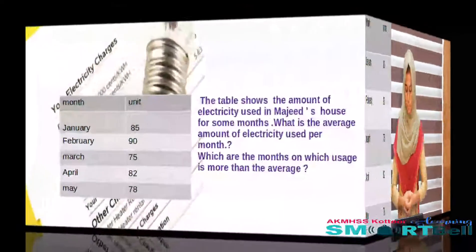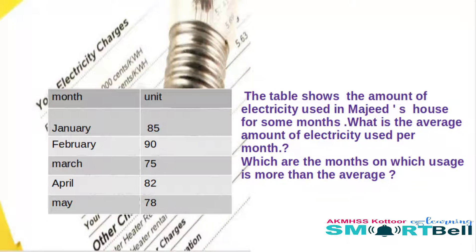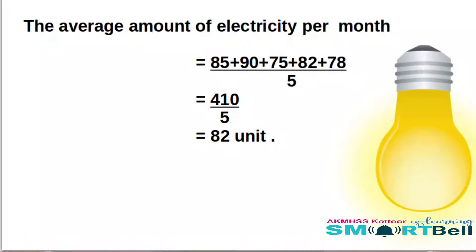Here is one more question related to electricity bills. Do you know how much is the electricity bill in your home this month? Here is a list showing the amount of electricity used in Majid's house for a few months. We need to find the average amount of electricity used per month. The average equals 85 plus 90 plus 75 plus 82 plus 78, divided by 5 — that is 410 divided by 5, which equals 82 units.